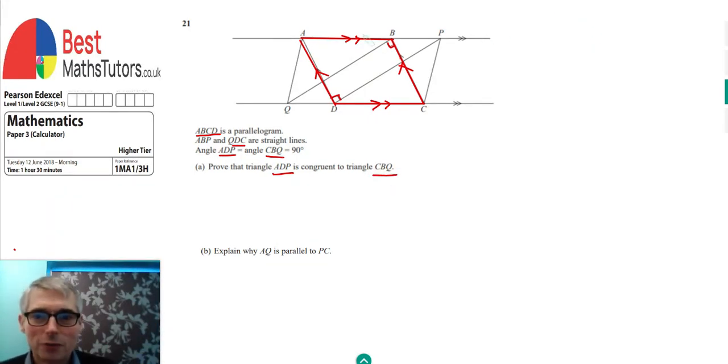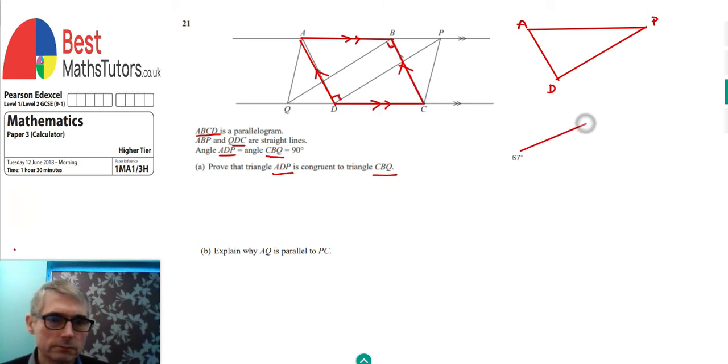But what we're told that we've got to do is prove that triangle ADP and QBC are congruent. So let me just try and draw these at the side because it's quite confusing to see in all that where the shapes are that we're talking about. So this is the first one, which is ADP. So ADP. And the second one, which is the QBC. I'm going to draw here.